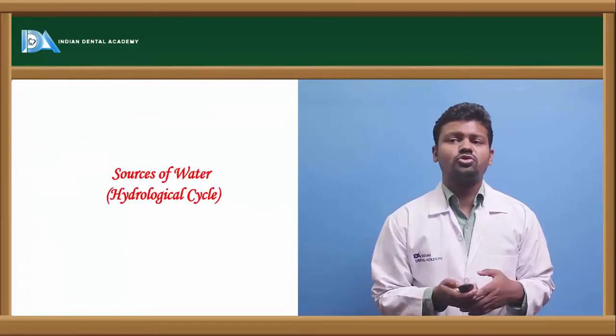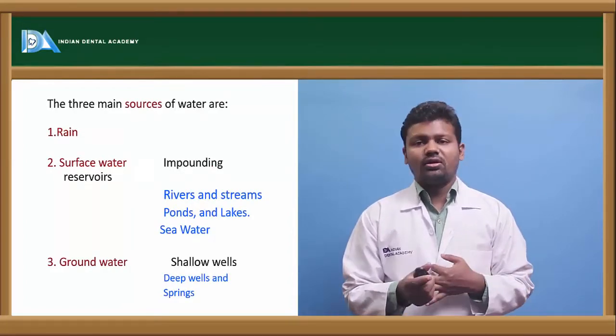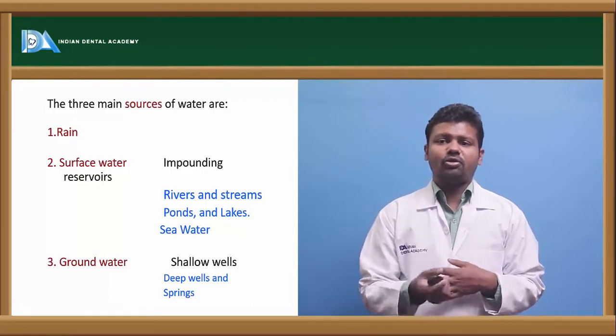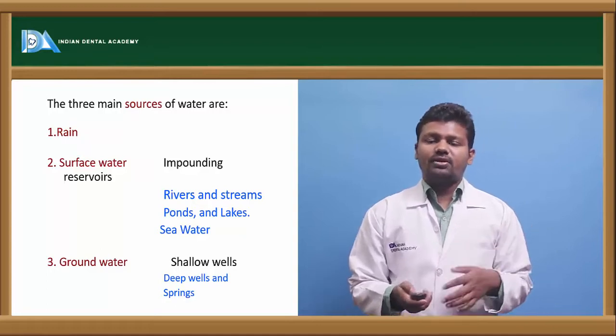Then there comes sources of water. In the hydrological cycle they can say there are three main sources: rain, surface water that is reservoirs, lakes and everything, and ground water. Ground water can be obtained through deep wells and springs.